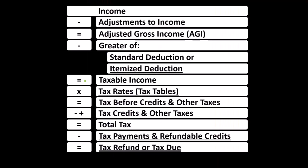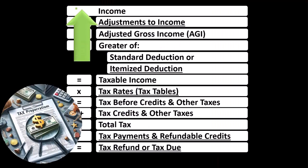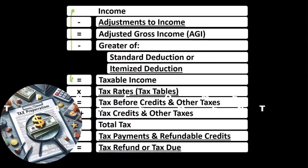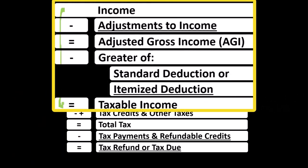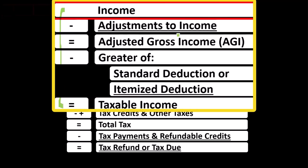Looking at our income tax formula, remember that the first half of the tax formula is basically an income statement. Most income statements have income minus expenses resulting in net income. Here we have income minus various deductions resulting in taxable income, with Sole Proprietorship Schedule C rolling into line one income of the formula.